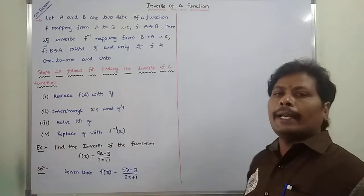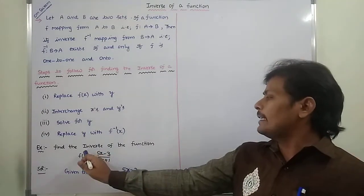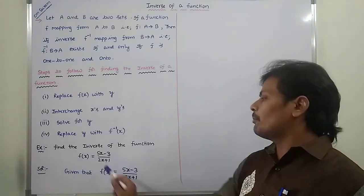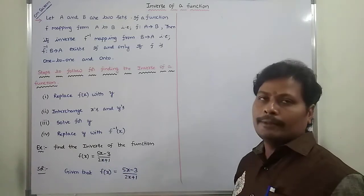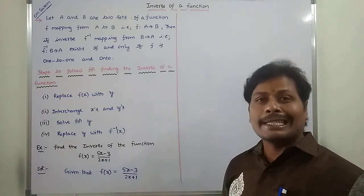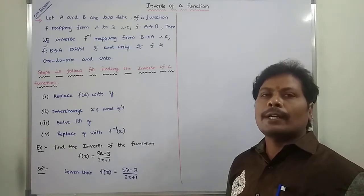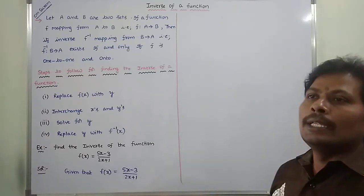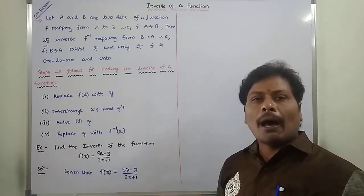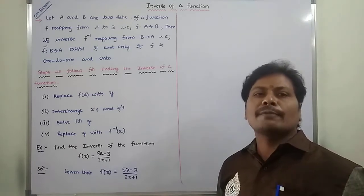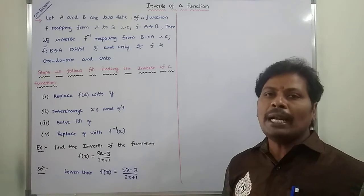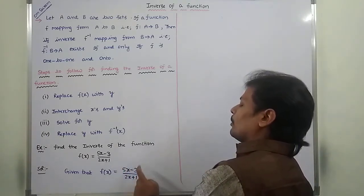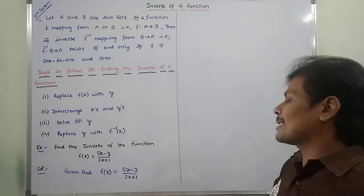Now we go for another example. Find the inverse of the function f of x is equal to 5x minus 3 divided by 2x plus 1. In the previous video, I discussed what is the inverse of a function and how to find out the inverse of a given function, and we solved one example problem. Now in this video, I am solving another example problem. So here, given that f of x is equal to 5x minus 3 divided by 2x plus 1.